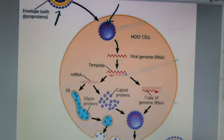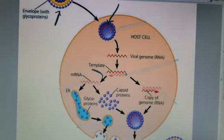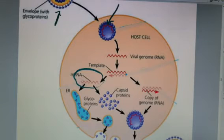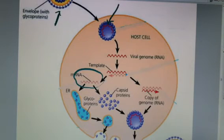The viral RNA will be inside the host cell and can be used as messenger RNA, which will then be used during translation to make proteins — glycoproteins. This is why they need a host, because viruses don't have their own ribosomes, yet the majority of their body is protein. So they have to get into a host to use the cell's ribosomes. This messenger RNA is going to be used during translation to make both glycoproteins and capsid proteins.